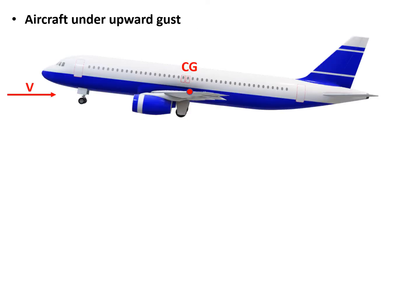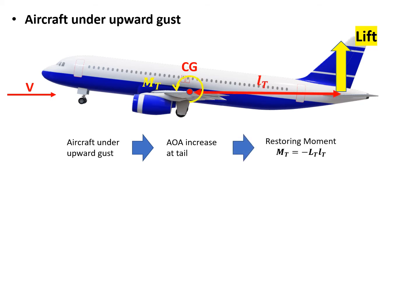We've seen this aircraft before — it's a side view. The CG is indicated by the red dot. The flow scenario is the aircraft on an upward gust, which will cause an angle of attack increase at the tail plane and especially on the elevator. We get a lift, and this lift will produce a restoring moment around the CG. We have M_T equals minus L_T · L_T. Remember this negative sign because this moment is pointing towards the negative direction of the y-axis, so we call it the restoring moment.